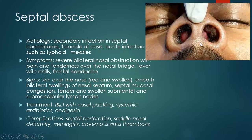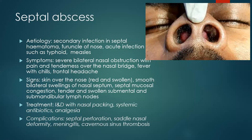If there is already cartilage necrosis, there will be communication on either side resulting in septal perforation. If it heals with cartilage loss, you can have a saddle nose deformity. Infection can also spread through the danger triangle of the face to the brain, giving you meningitis and cavernous sinus thrombosis. Remember not to touch any pimple in the danger triangle of the face.